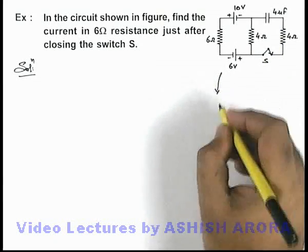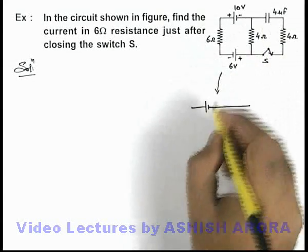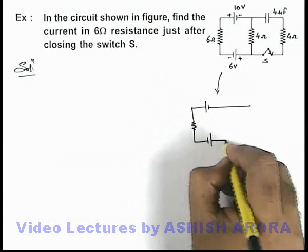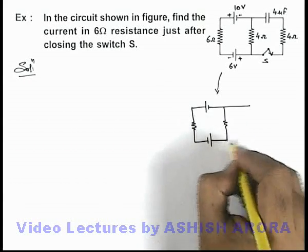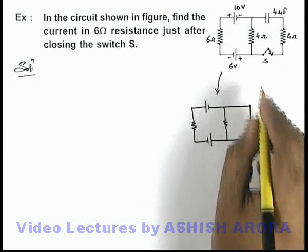So just after closing the switch, the circuit can be redrawn like this. Here the capacitor will act like a straight wire or just as a short circuit, and the rest of the circuit we can draw here. I'm taking the switch to be closed.